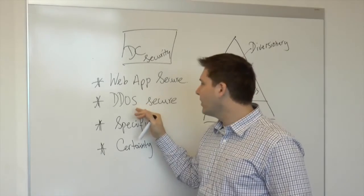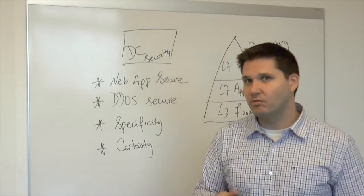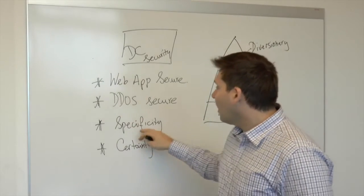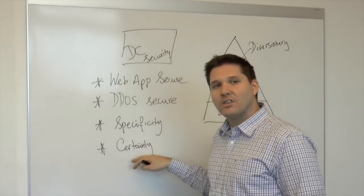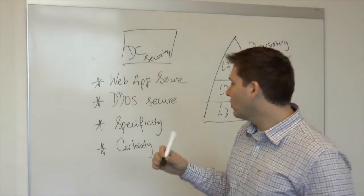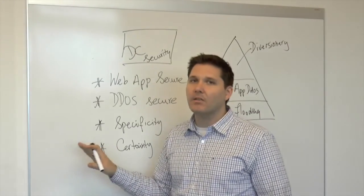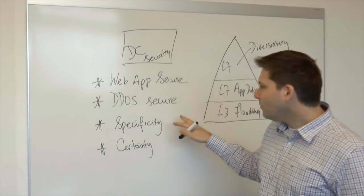The last two - specificity and certainty - how can I make sure that I'm blocking the right guy and how do I make sure that if I take a block action that I don't impact a lot of people?